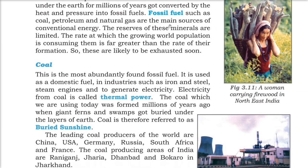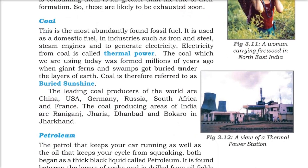Here is a woman carrying firewood in northeast India — more than 50% of our country uses firewood for cooking and other purposes. Coal is the most abundantly found fossil fuel. We use it for domestic fuel, in industries like iron and steel, in steam engines, and to generate electricity. Electricity from coal is called thermal power. The coal we use today was formed millions of years ago when giant ferns and swamps got buried into layers of earth — that is why coal is called buried sunshine.